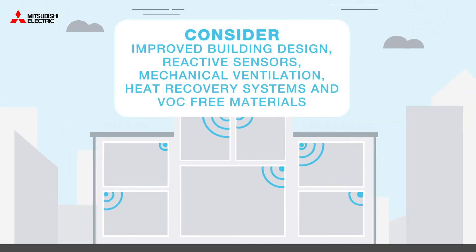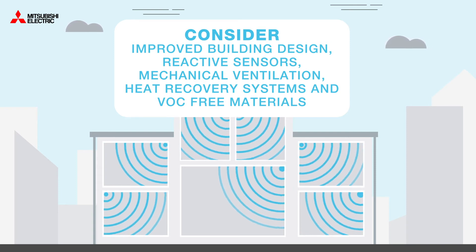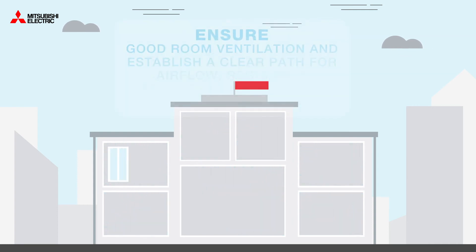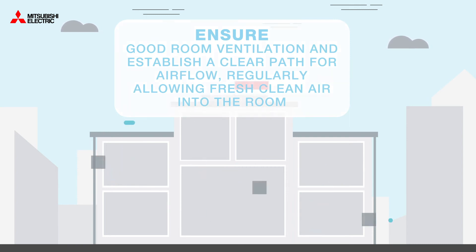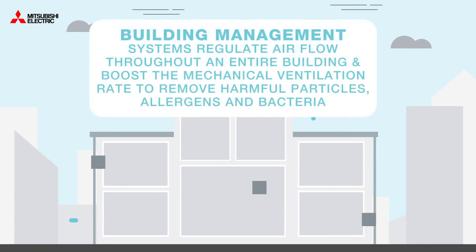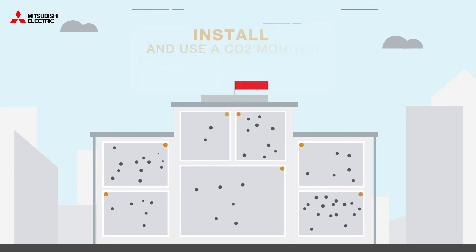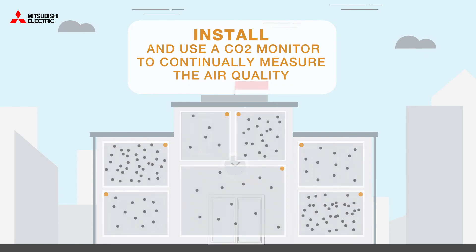Consider improved building design, reactive sensors, mechanical ventilation, heat recovery systems and VOC-free materials. Ensure good room ventilation and establish a clear path for airflow, regularly allowing fresh clean air into the room. Building management systems regulate airflow throughout an entire building and boost the mechanical ventilation rate to remove harmful particles, allergens and bacteria. Install and use a CO2 monitor to continually measure the air quality and control the ventilation rate.